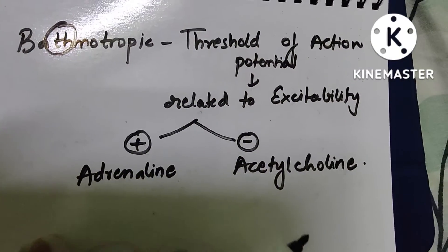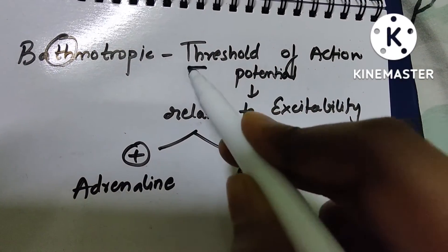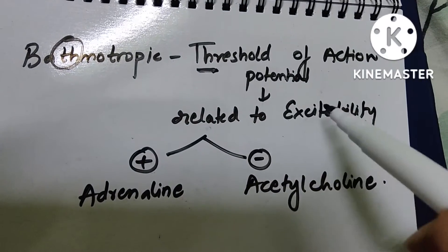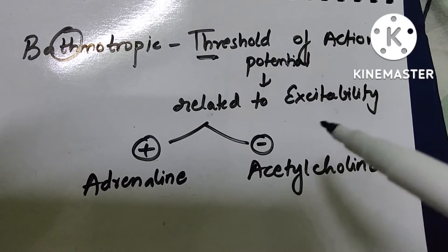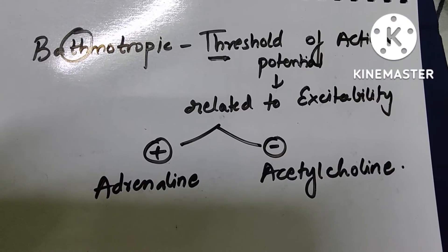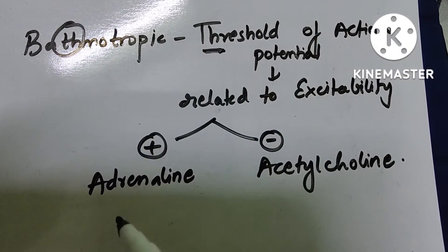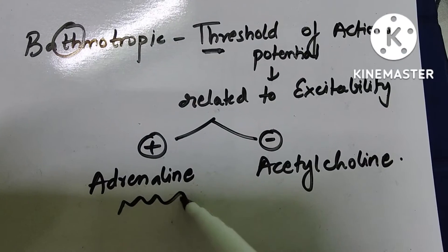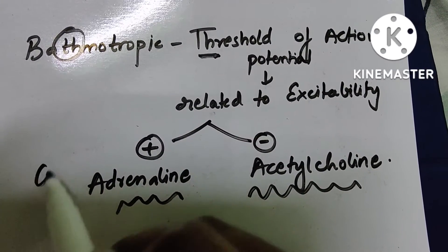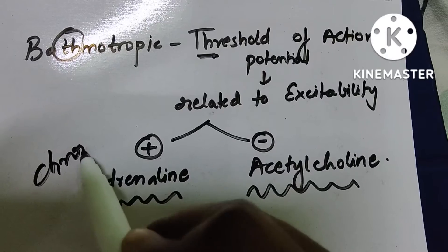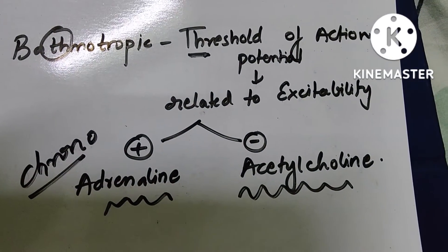And lastly, bathmotropy. Bathmotropy means threshold — 'Th' is for threshold of action potential. It is related to excitability of the muscle: from resting membrane potential to action potential, then the muscle excites. Positive bathmotropic effect is by adrenaline and negative is by acetylcholine. This same example applies to chronotropic effects as well — chronotropy and bathmotropy share the same examples: adrenaline and acetylcholine.